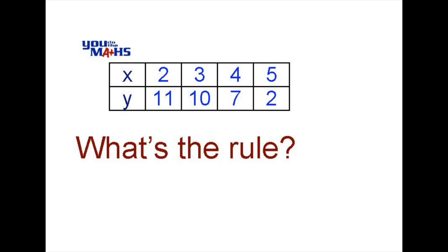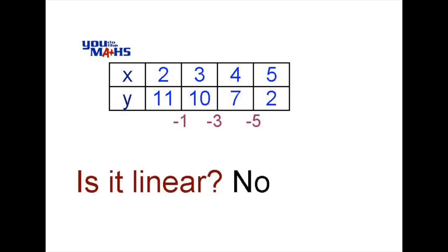In this question we're being asked to find a rule that connects the y value given the x values in the table. So what we'll do first of all is go through some possibilities. We'll have a look at the first difference. In this case 10 minus 11 is negative 1, and 7 minus 10 is negative 3. We can see that the first difference is not constant, so it's not a linear pattern.